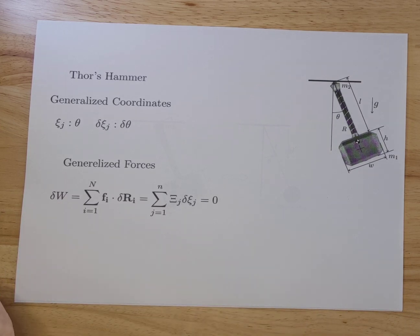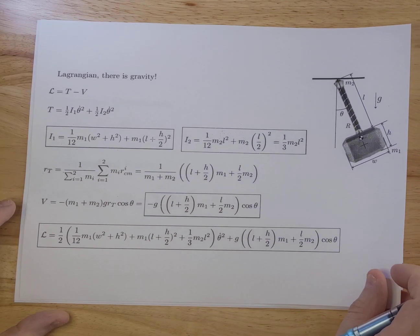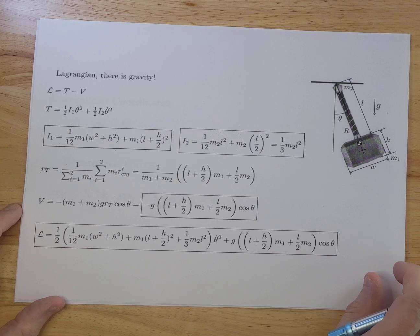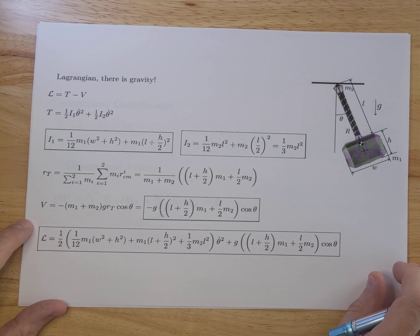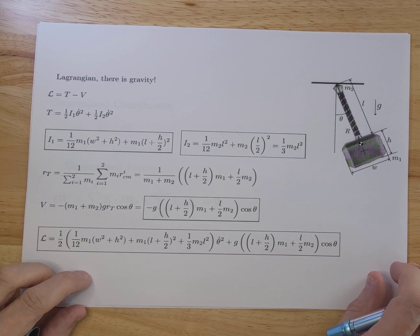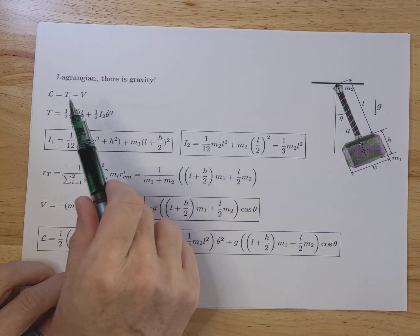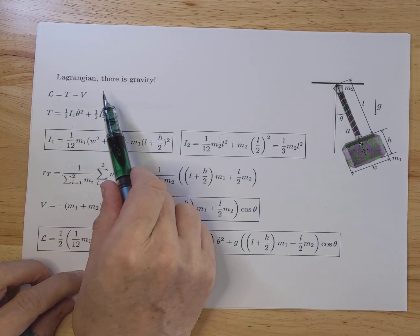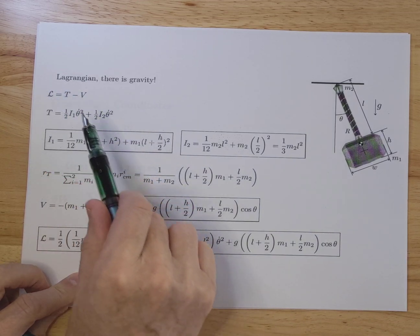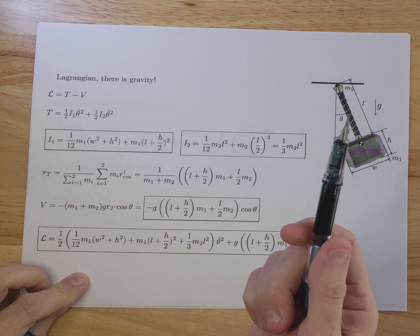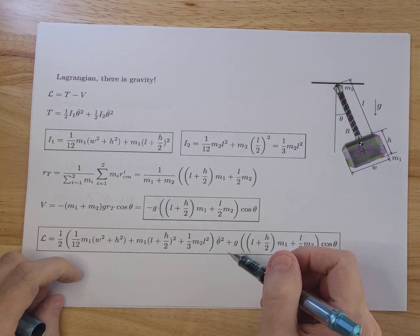Now we're going to determine the Lagrangian. We always do that in two steps: we look at the kinetic energy first, then the potential energy. We subtract those, and that gives you the Lagrangian. Based on that, you can calculate the equations of motion.